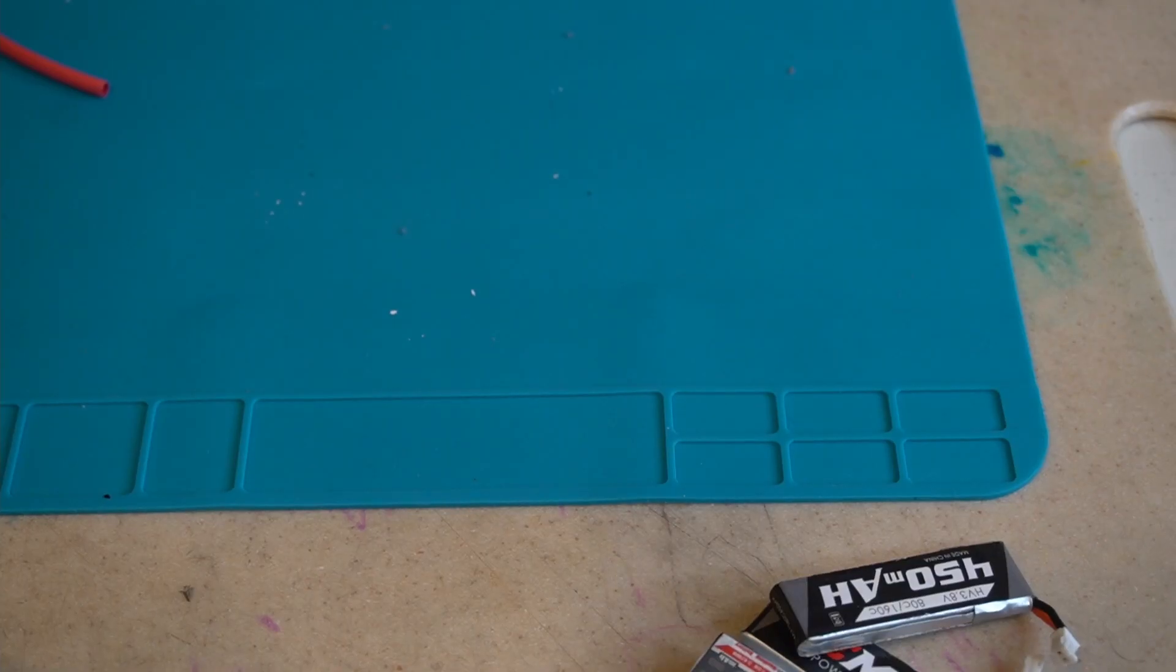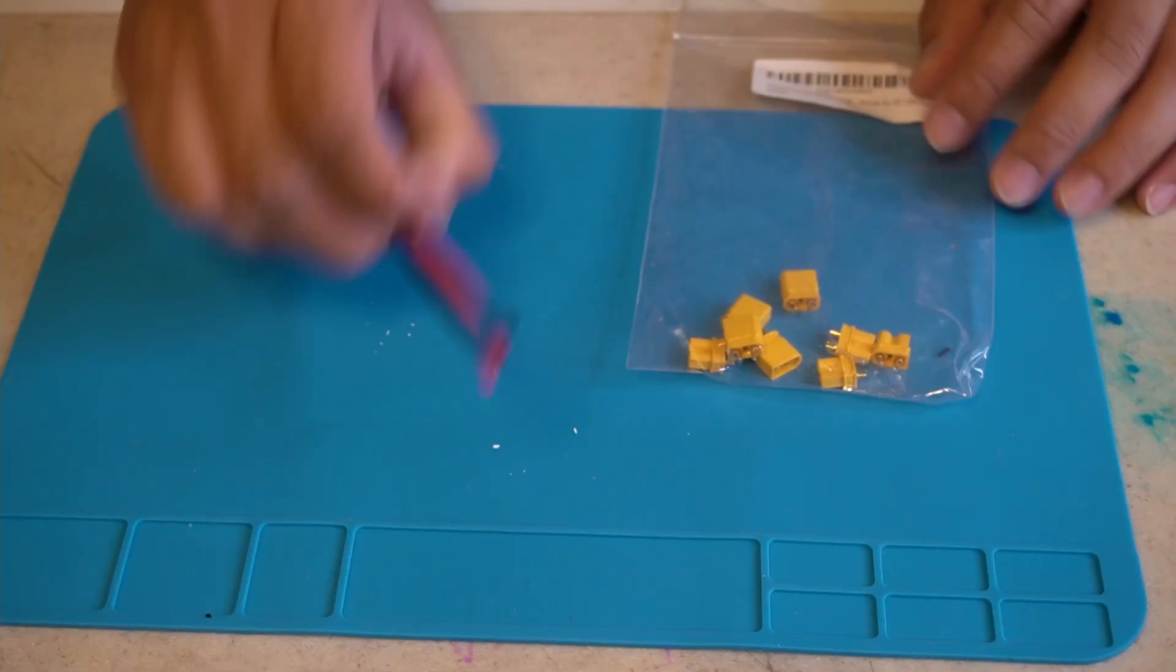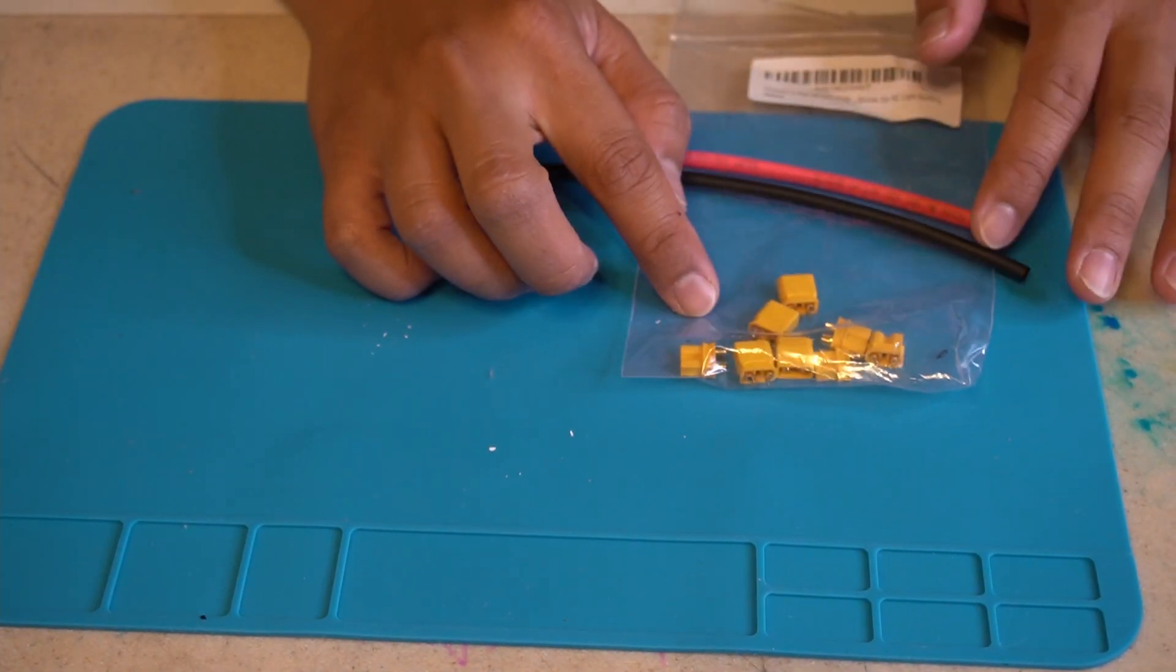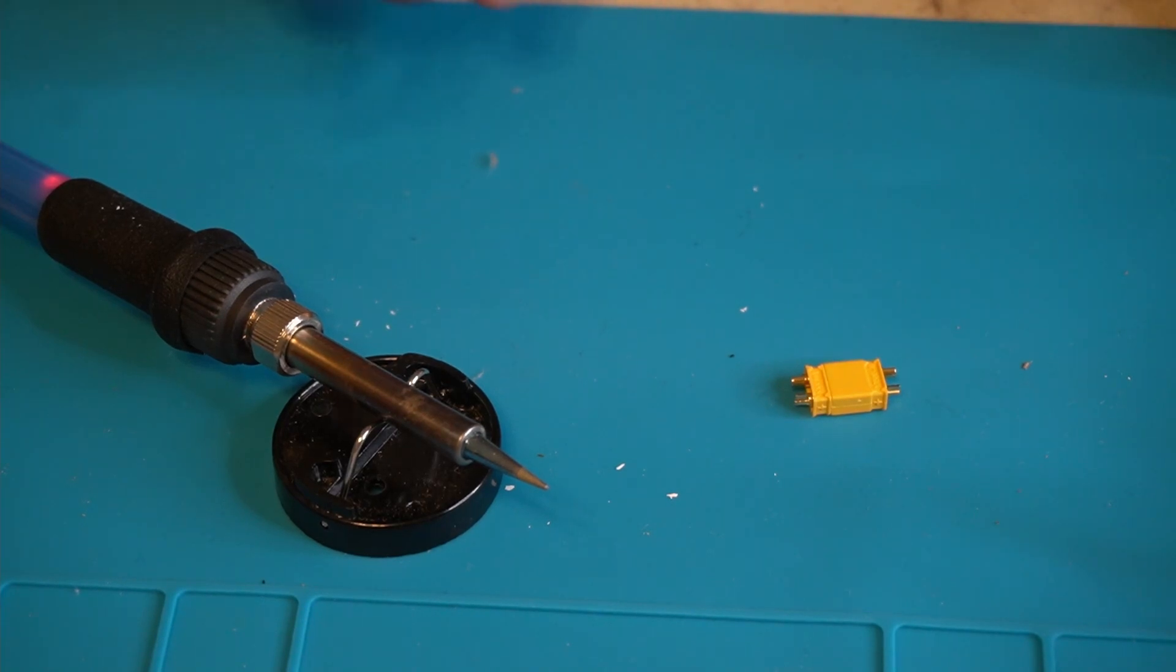Alright guys, so hopefully you guys learned something today. I don't solder very well. I definitely recommend getting one of these silicone pads, helps with the cleanup. Flux makes it easier to solder. If you can happen to get the kit of the male and female side of the XT30, hook them together and make sure you connect it right. That'll help with preventing you from melting the plastic. I started it again. I suck at it, but I did it. Hopefully you guys enjoyed this. Do you guys have any soldering tips? I'd love to hear a comment below.